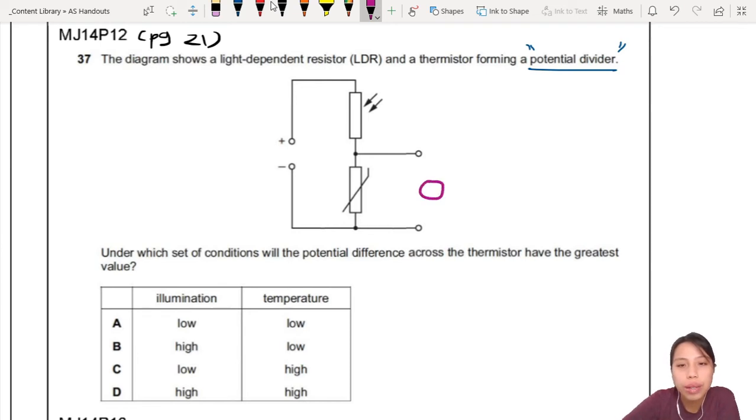Thermistor. So this one. If you're trying to measure what's the potential difference across it. Have the greatest value. When will this have the greatest value? So, potential difference. We're looking at potential difference.